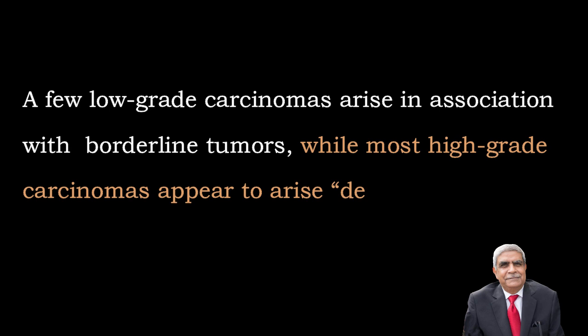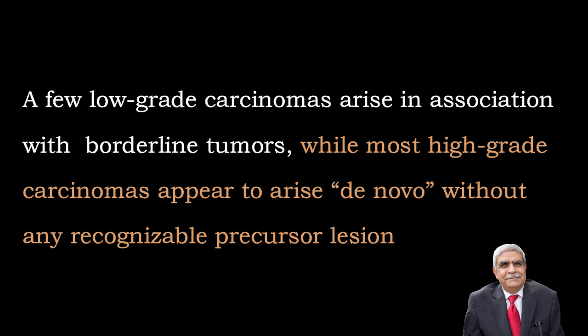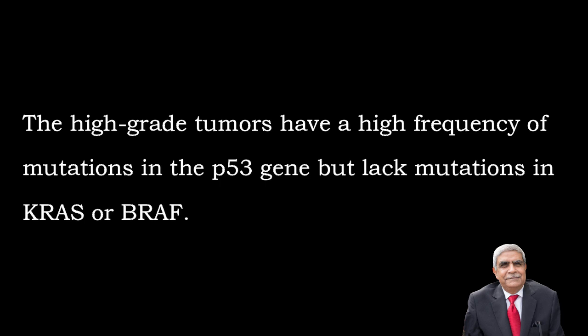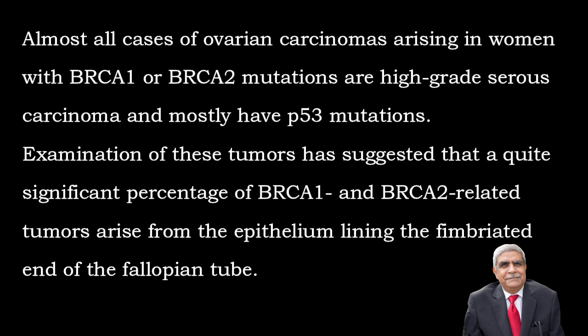Some low-grade cancers arise in association with borderline tumors, while most high-grade carcinomas appear to arise de novo without any recognizable precursor lesion. Low-grade tumors arising in serous borderline tumors have mutations in KRAS or BRAF oncogenes with only rare p53 mutations. High-grade tumors have a high frequency of p53 gene mutations but lack mutations in either KRAS or BRAF. Almost all reported ovarian cancers in women with BRCA1 and BRCA2 mutations are high-grade serous carcinomas, which also commonly have p53 mutations.